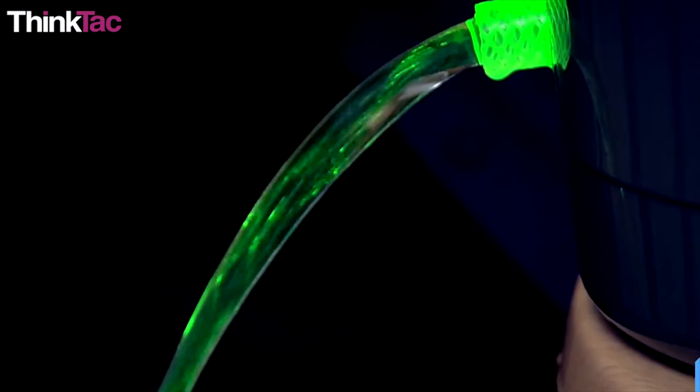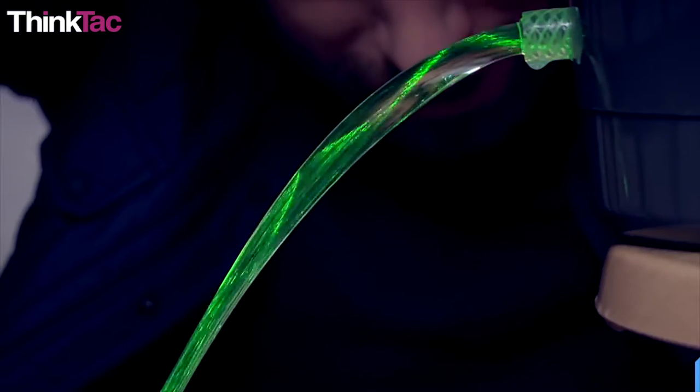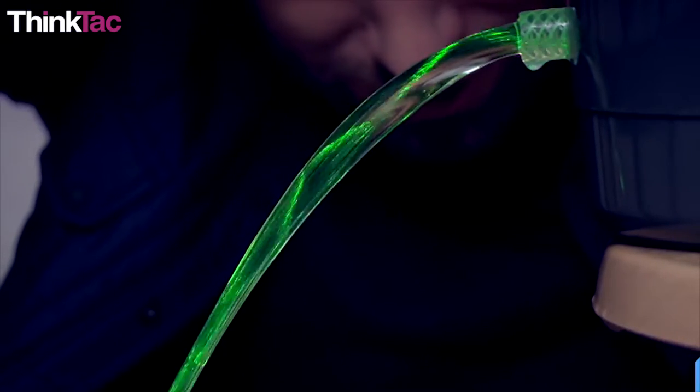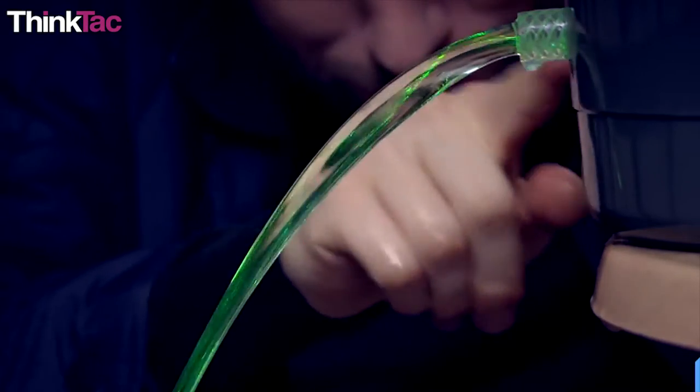One can try a variation of this experiment by sending bright light through a covered water container. When we pour the water from the container, we will observe that the light will bend along with the path of water. This was the first experimental proof of total internal reflection.